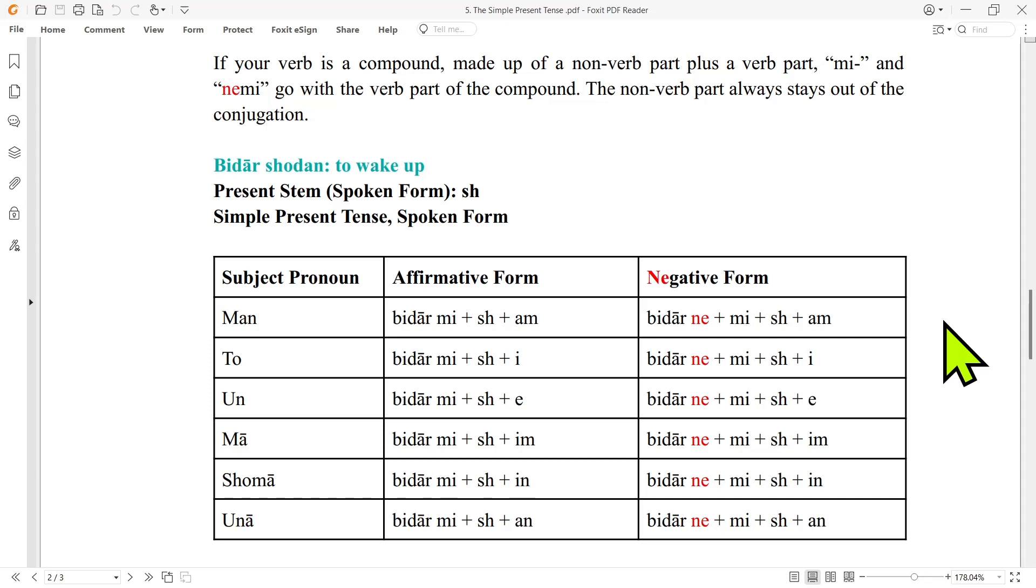To bidar mi shi, to bidar n'mi shi, on bidar mi she, on bidar n'mi she, ma bidar mi shiim, ma bidar n'mi shiim, shoma bidar mi shin, shoma bidar n'mi shin, and oona bidar mi shen, oona bidar n'mi shen.